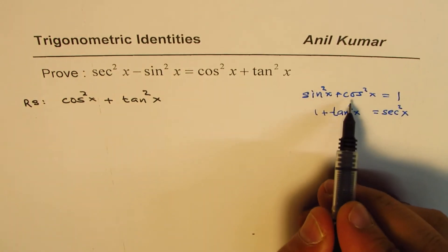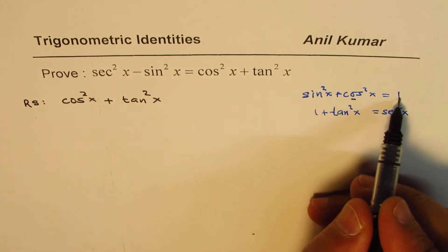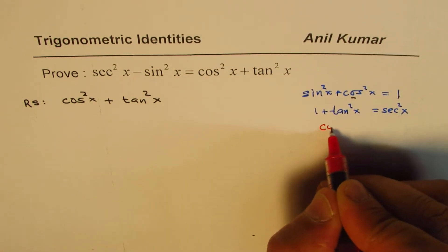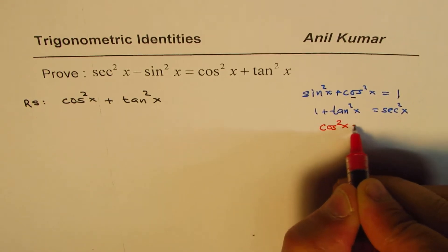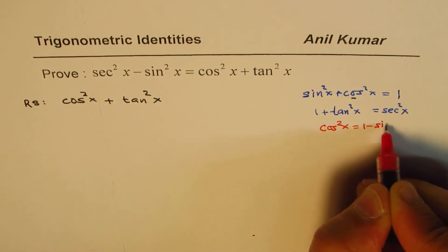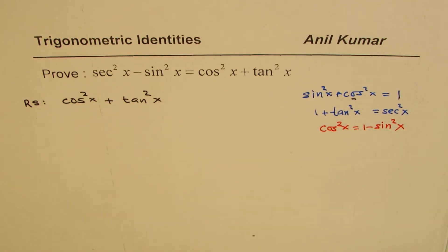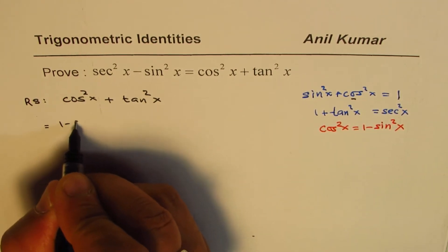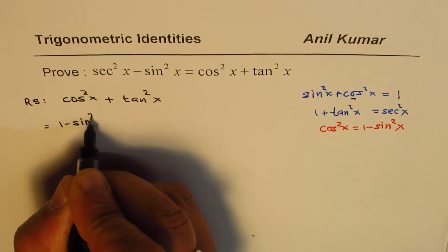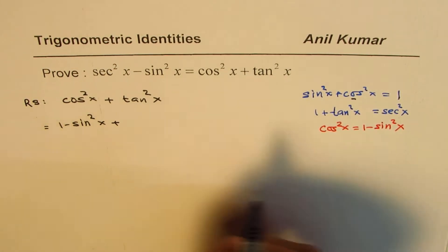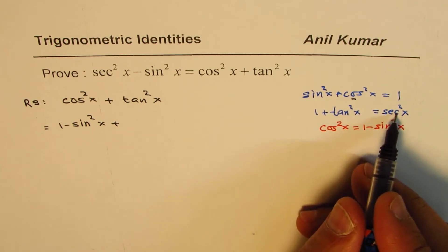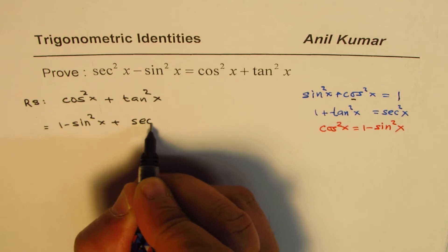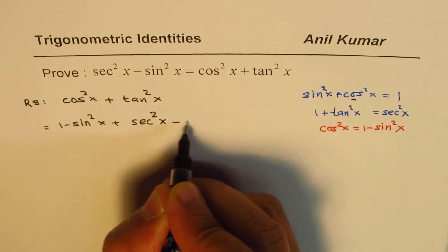Now, what is cos square x? Cos square x could be written as 1 minus sine square x. So replacing cos square x by 1 minus sine square x, and tan square x could be written as secant square x minus 1. So I replace tan square x by secant square x minus 1.